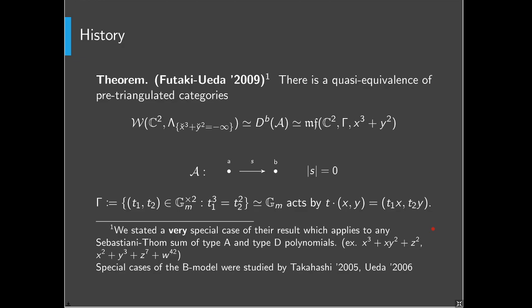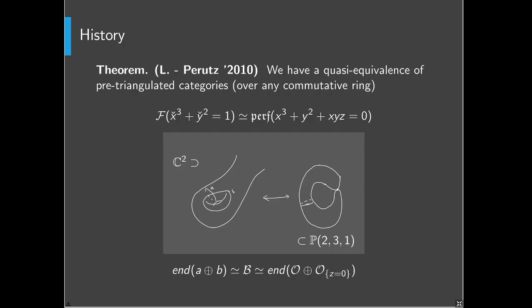This is a very special case of a much more general result they proved, but I want to focus on this particular one. If it was just this one, it's a very simple computation of both sides — an exercise. But the result is about arbitrary Thom-Sebastiani sums of type A and type D polynomials, in any dimension. These B-module categories were also studied by Takahashi and Ueda a few years before.